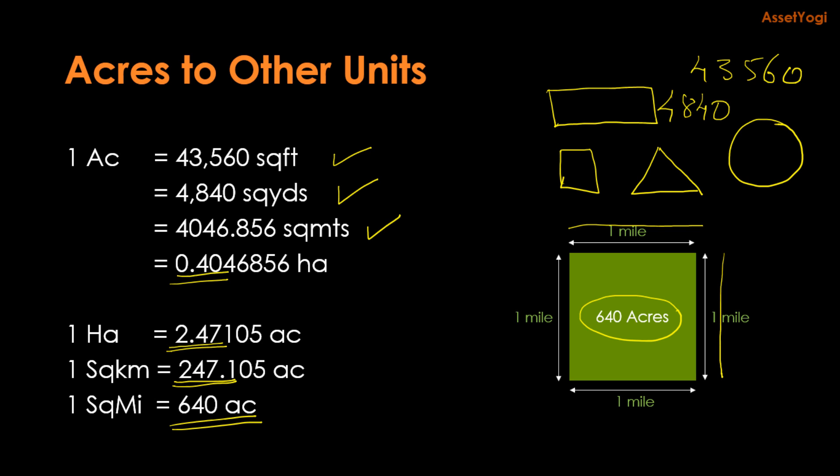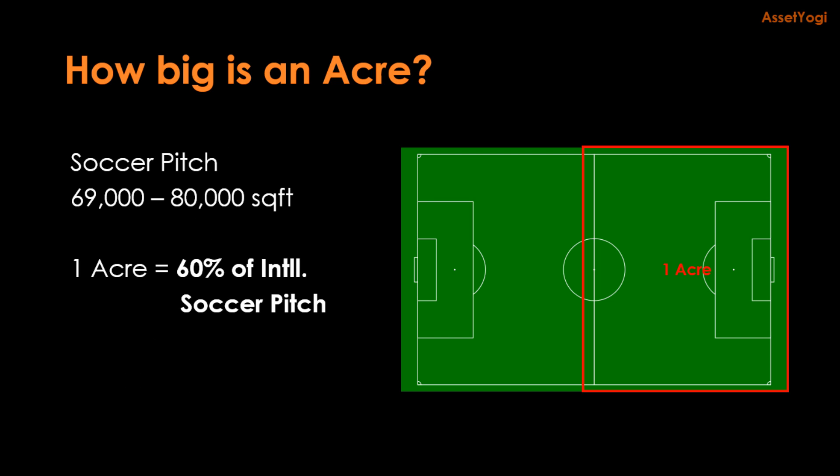Now let us try to visualize the extent of an acre. Let us compare an acre with a soccer pitch. An international soccer field is between 69,000 and 80,000 square feet, including the end zones. So an acre is 43,560 square feet. So you can imagine an acre to be roughly about 60 percent of an international soccer field.